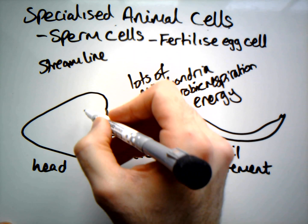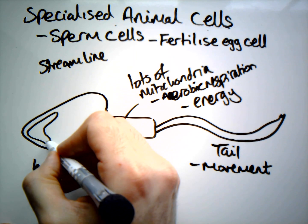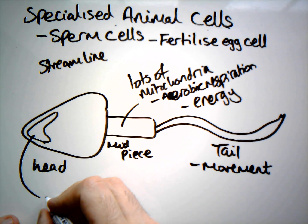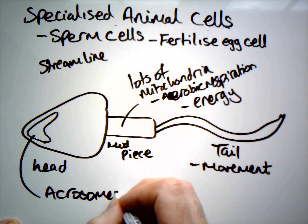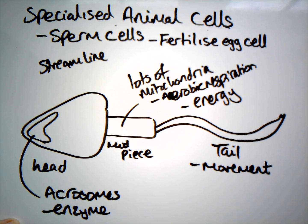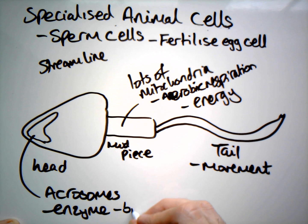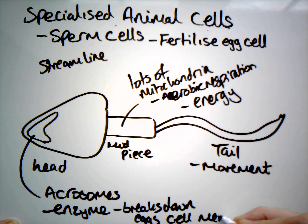Within the head we have two key features. The first is right at the tip — a section called the acrosome, which contains enzymes. When the sperm reaches the egg cell, these enzymes explode on contact and break down the egg cell's membrane, allowing the sperm to penetrate inside.